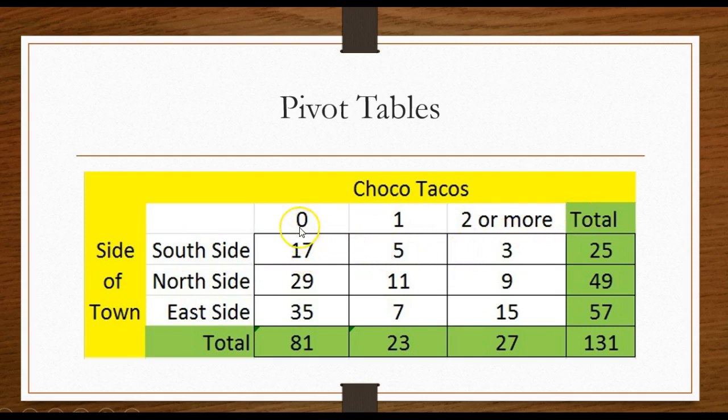In other words, 17 did not buy a Choco Taco at the ice cream truck. Perhaps they bought a creamsicle. Five on the south side bought one. Three people bought two or more.